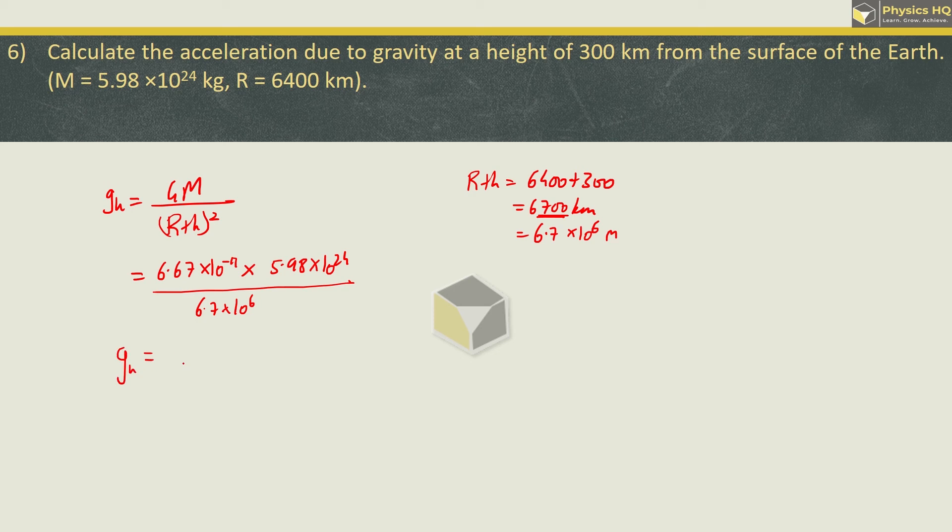Once again we need to use log over here. Using log for 6.67, 5.98 and 6.7, you will get the answer as 8.885 meter per second square. Hope you all understood this.